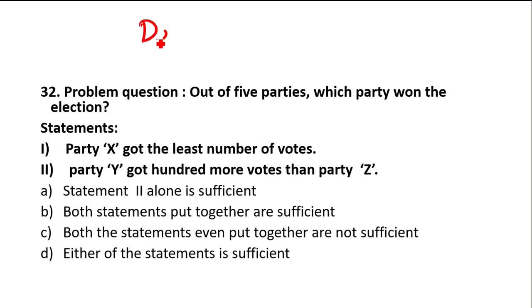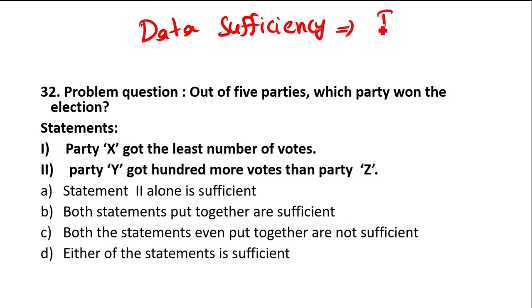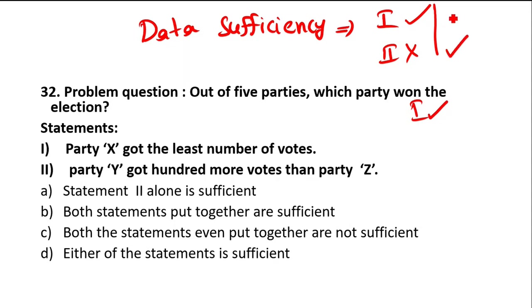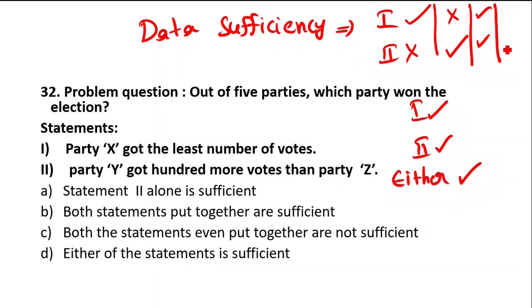This is from data sufficiency. Data sufficiency means whatever information they have given — whether it is sufficient to answer the question or not, we have to check. They will be giving two statements. You have to check with respect to the first statement. If you get the answer, fine. If you are not getting the answer with statement two but getting it with statement one, then pick 'statement one alone is sufficient.' If getting the answer with statement two but not with one, pick 'statement two alone is sufficient.' If getting the answer with both, then 'either of the statements is sufficient.' If not getting the answer with both, combine — either you get the answer or you don't.